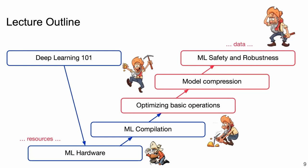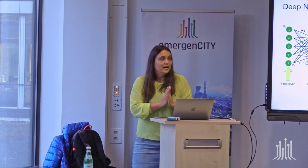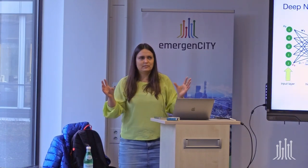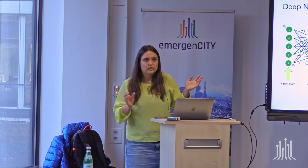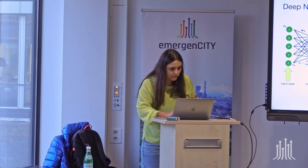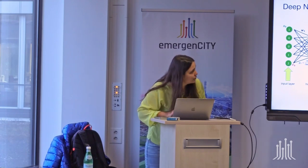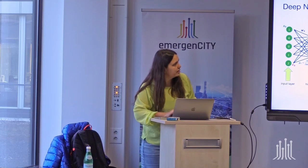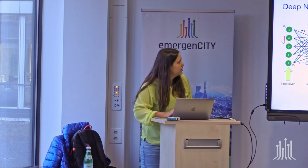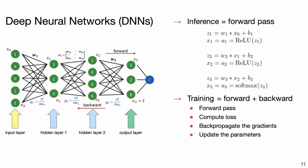Deep Learning 101. Everyone has probably seen a deep neural network: there's an input layer, hidden layers, and an output layer. To compute the pre-activations, you take your input and multiply it by the weight matrix — all the connections form a matrix. You can add a bias. Then you apply a non-linearity. Here I use ReLU: if the input is positive it passes through unchanged; if negative, it returns zero. With this you get post-activations, which serve as input to the next layer.